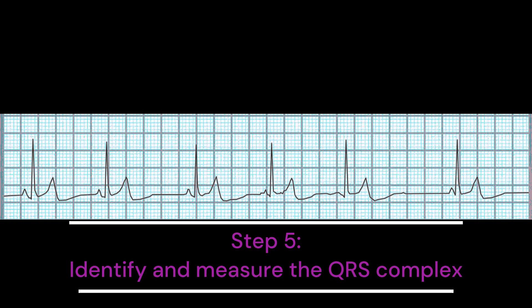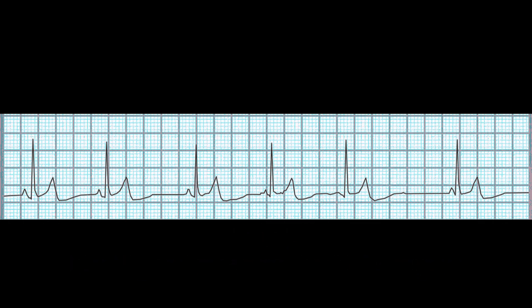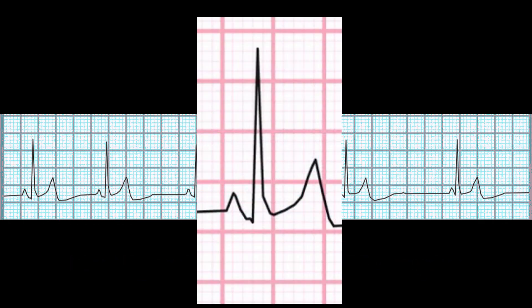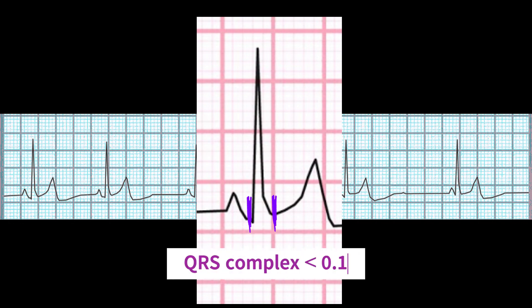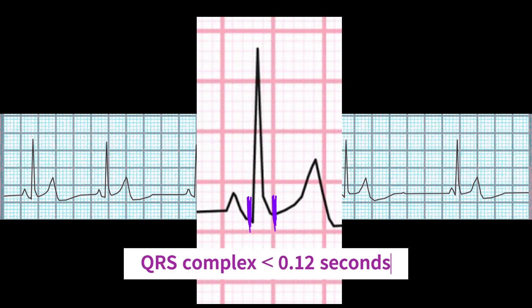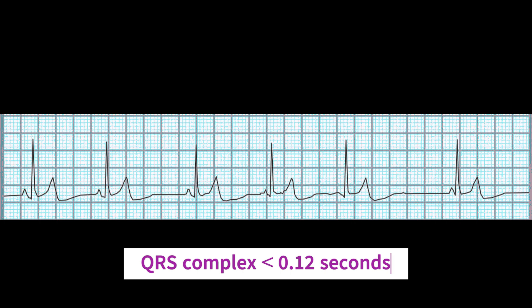Step 5: Measure the QRS duration. The QRS duration is the time it takes for the electrical signal to travel through the ventricles. In multifocal atrial rhythm, it should be less than 0.12 seconds, just like in a normal sinus rhythm. This EKG strip shows QRS complexes that are less than 0.12 seconds.